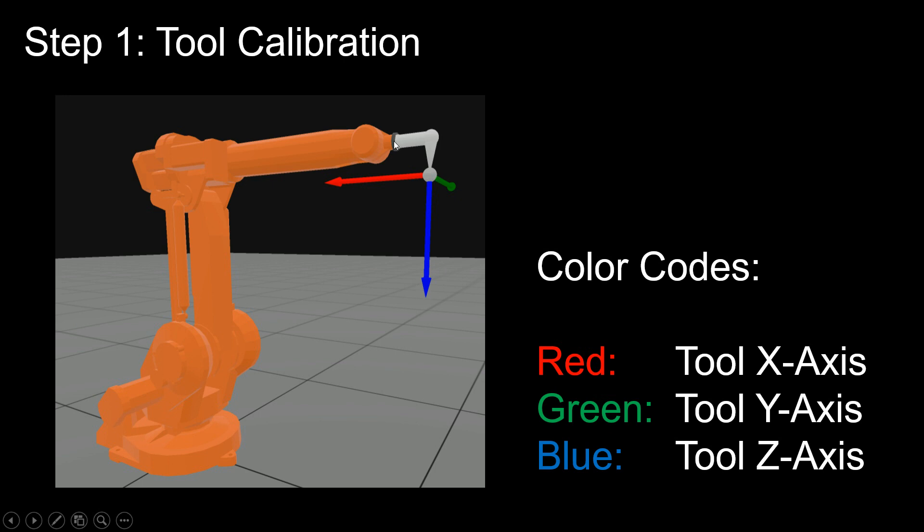You see here, usually the Z-axis of the tool is straight out of the flange, and you see here there's a rotation of 90 degrees about the green axis, so the tool Y-axis.